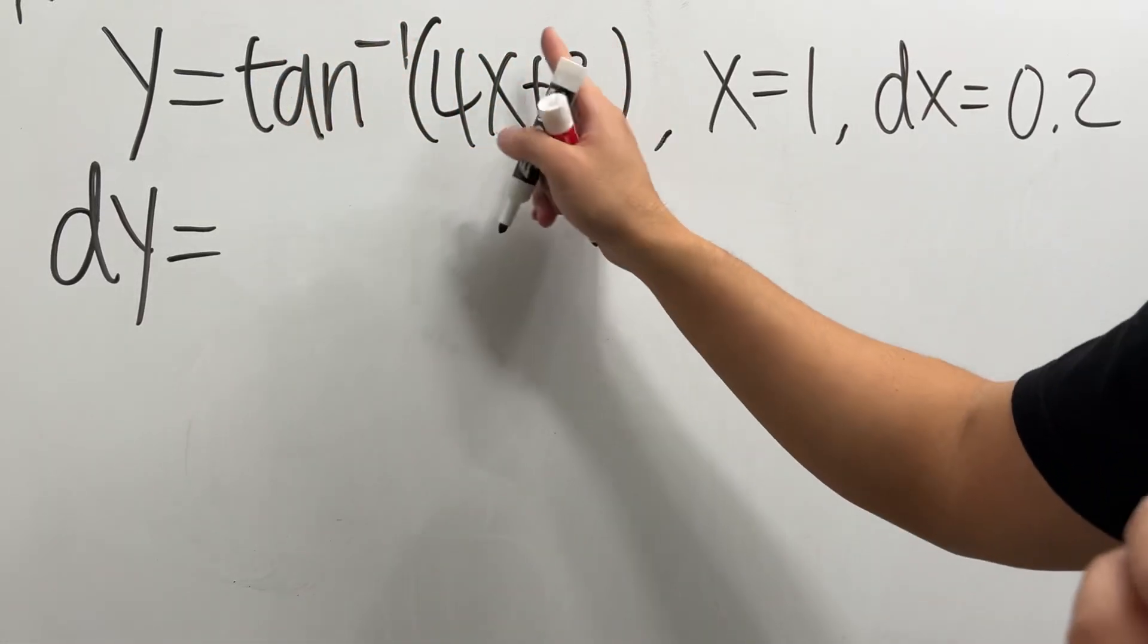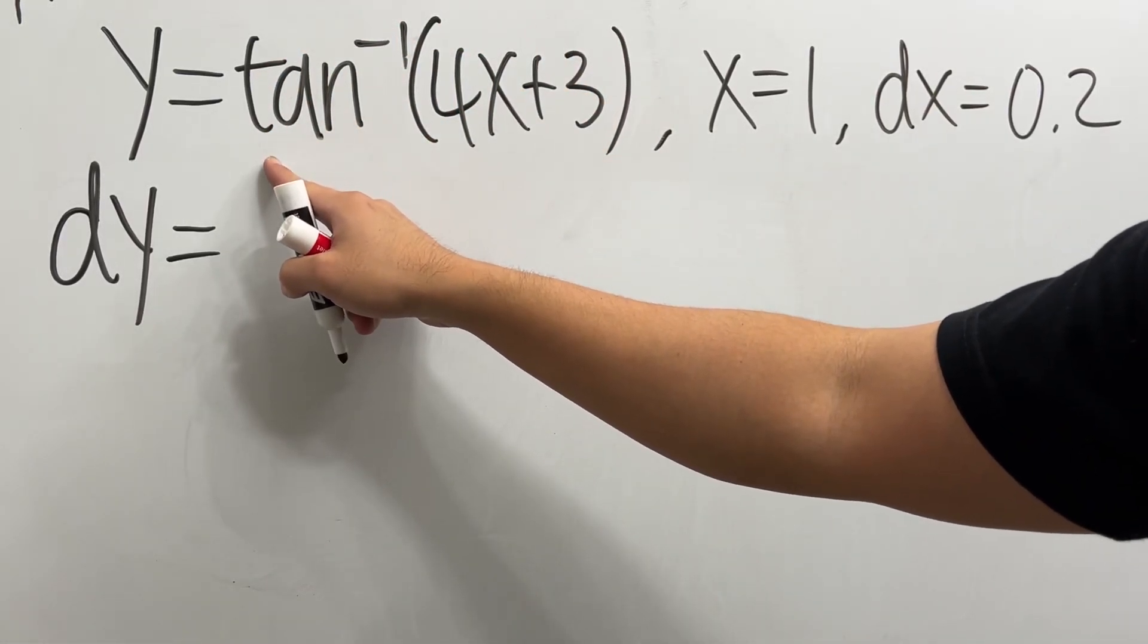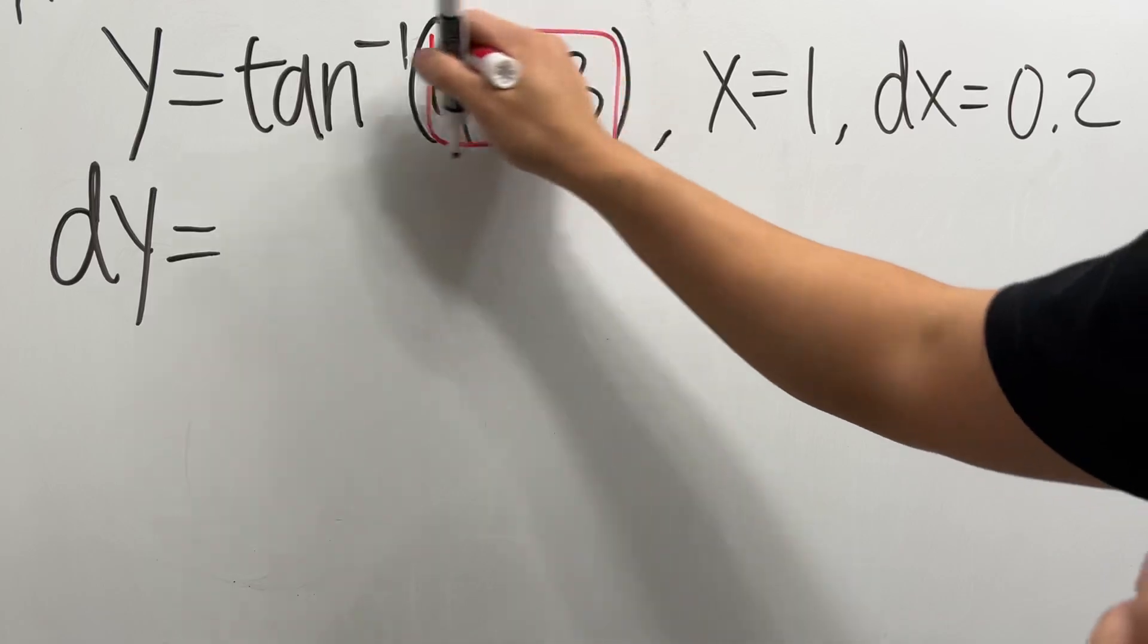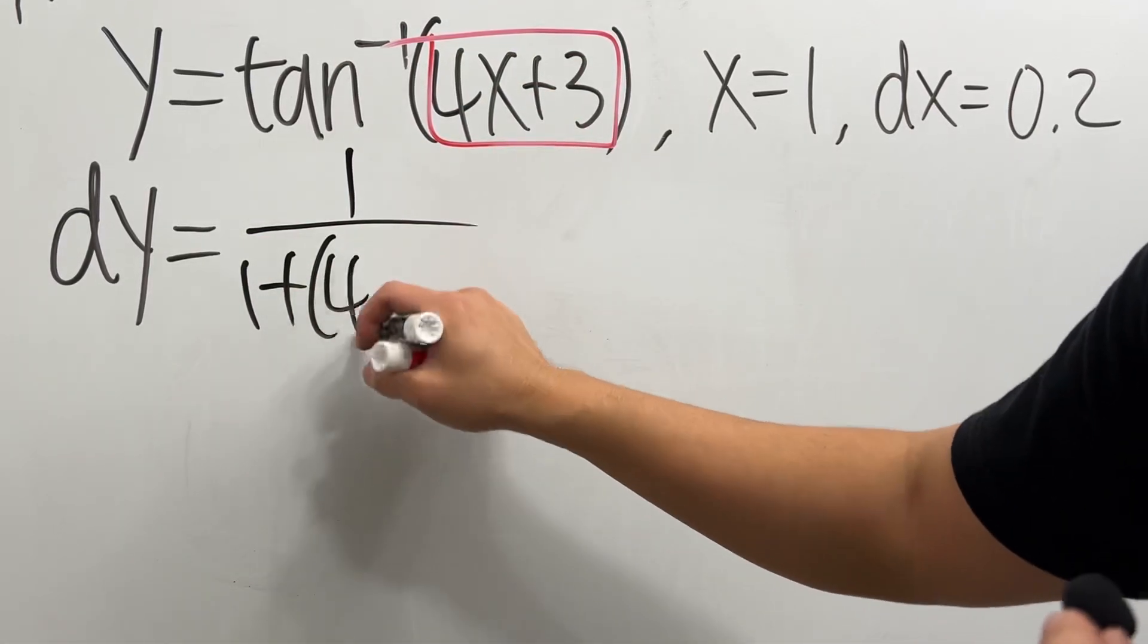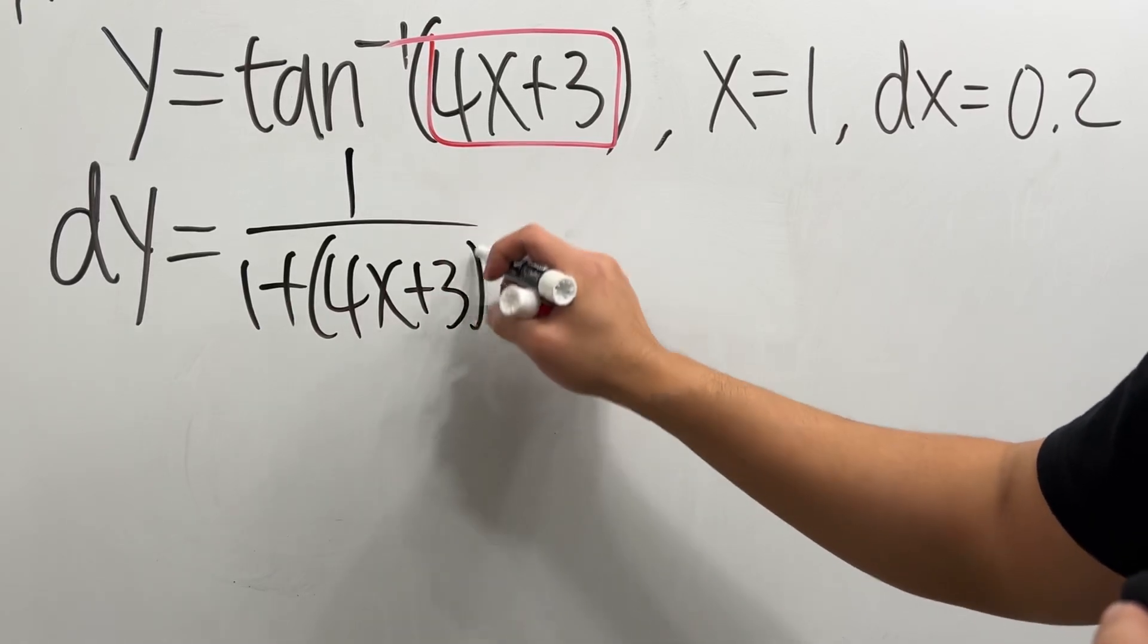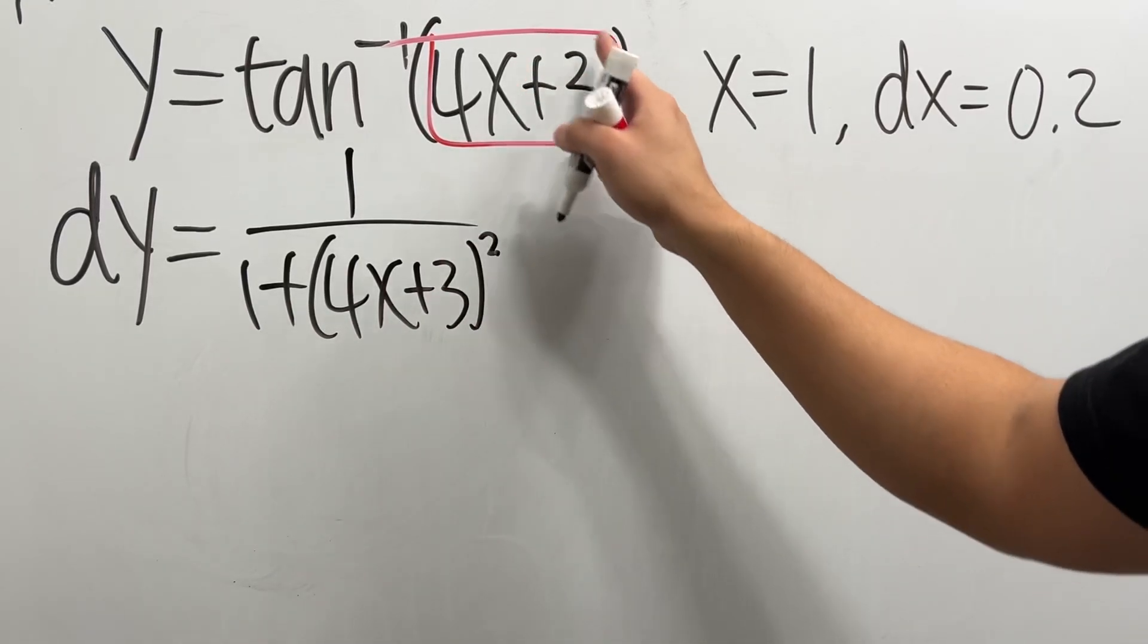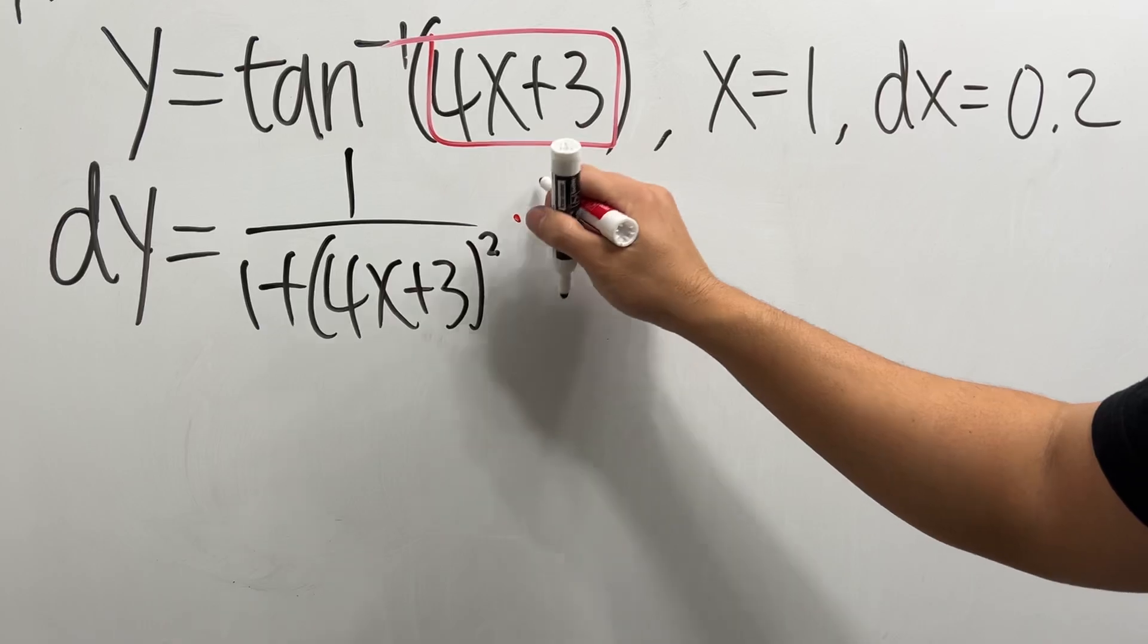Well, first, let's just differentiate this function. The derivative of inverse tangent of a box is 1 over 1 plus the box squared. So it's 4x plus 3, and then squared. Then use the chain rule, multiply by the derivative of the box, which is 4.